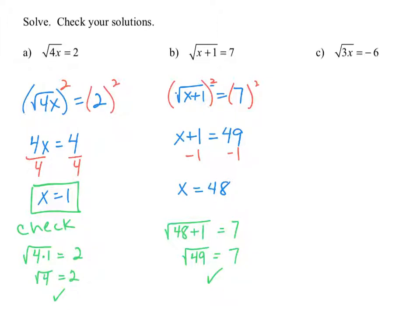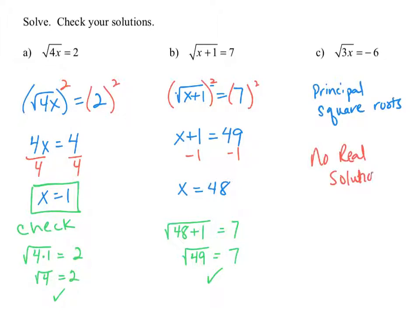When we get to example c, we have the square root of 3x equals negative 6. Considering that we're looking at the principal square roots being positive numbers, we can say that this has no real solution, because of how we define the square root — the square root of 3x must equal a positive number.